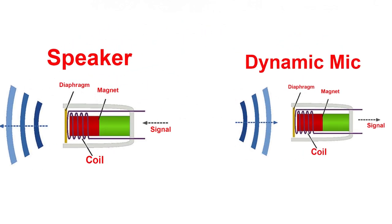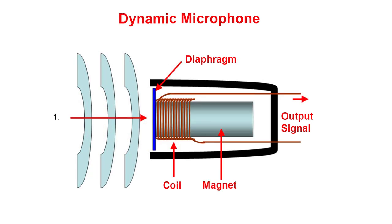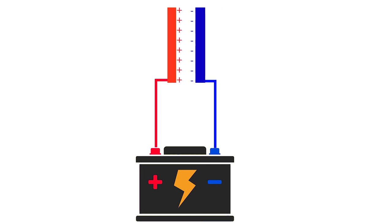Let's understand the second type of mic — the condenser microphone, also called a capacitor microphone. Its working principle is different from the dynamic mic. Whenever positive and negative current is applied to two metal plates, positive charge is stored on the positive terminal and negative charge on the negative terminal. As these plates get closer to each other, the amount of charge increases. The condenser mic works just like that.